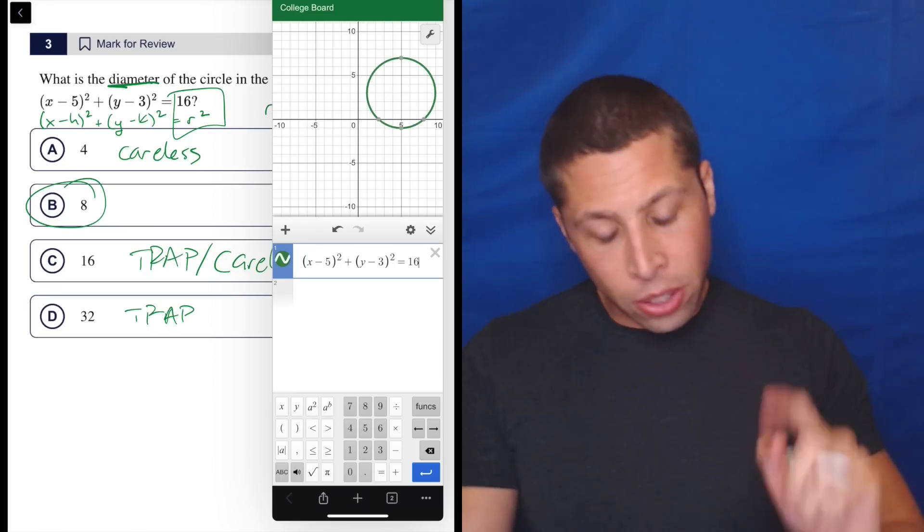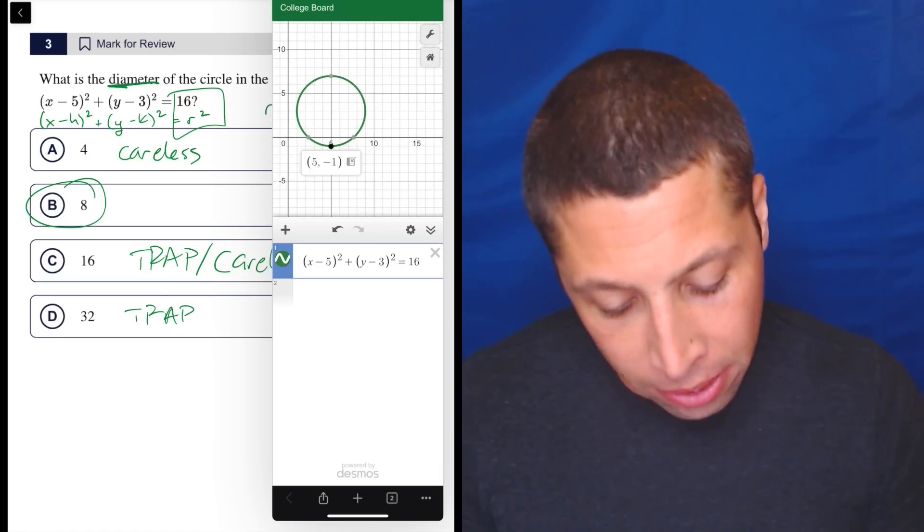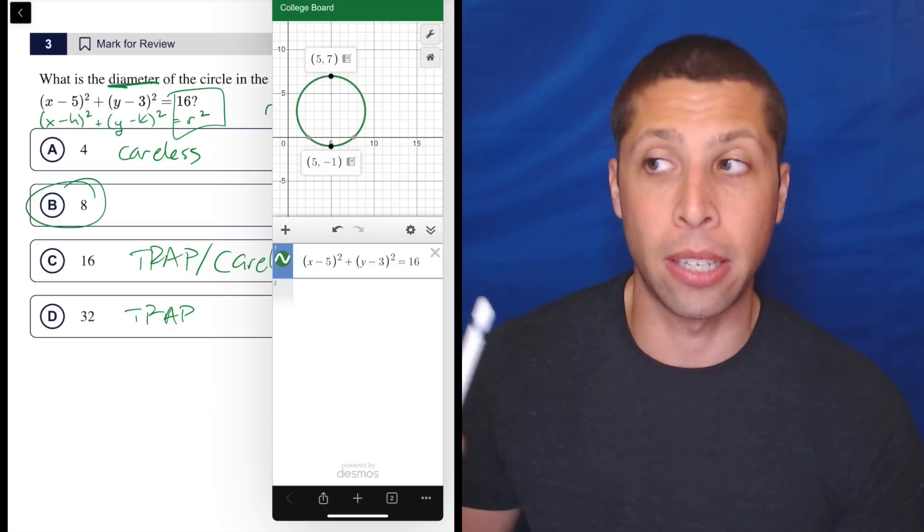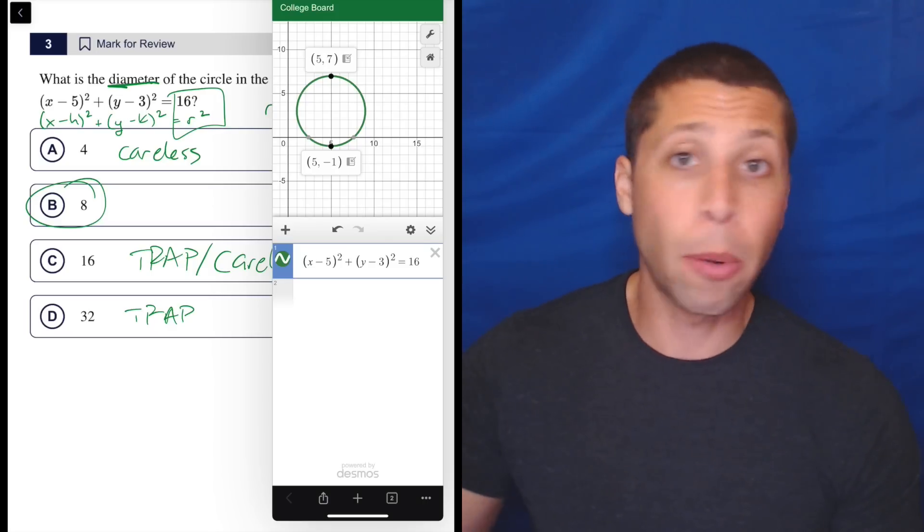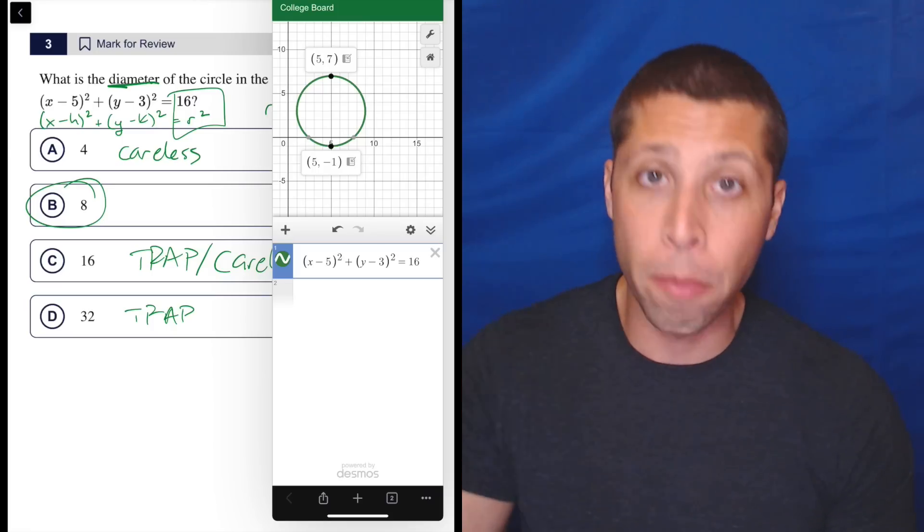And what Desmos does with circles is, I think it's doing this because it's giving us the maximum and the minimum. I think anytime we have something graphed, Desmos is really good about letting us touch, tap the maximum or the minimum values.